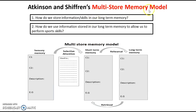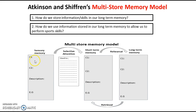Atkinson and Shiffrin's multi-store model — have a look at it there. This is a model that depicts or explains how we store informational skills in our long-term memory. We have a look at three parts — it's the multi-store memory model, so you've got three different stores of memory. We're going to look at the processes or stages behind how we put information into our long-term memory when we try to learn something.